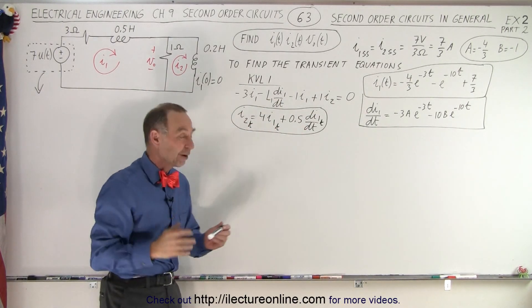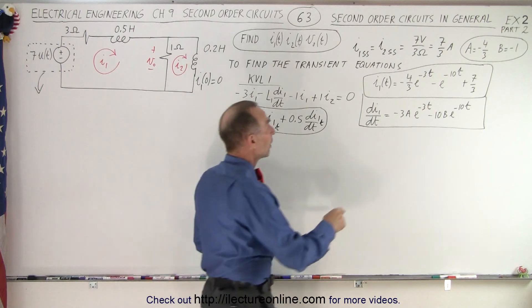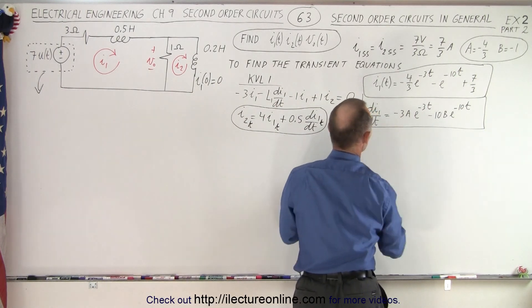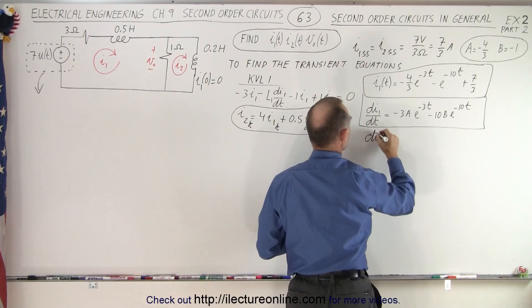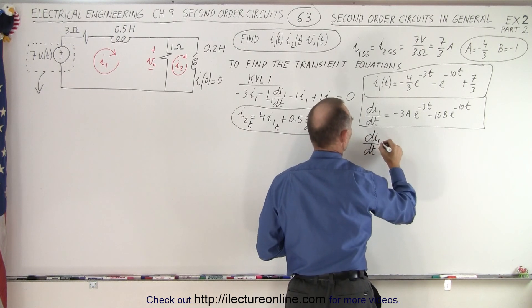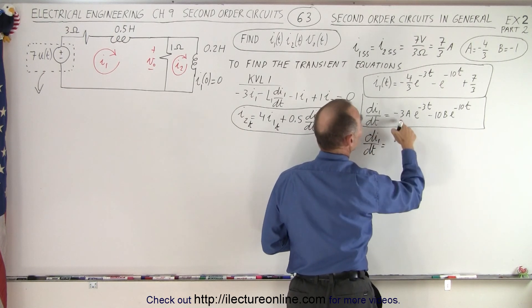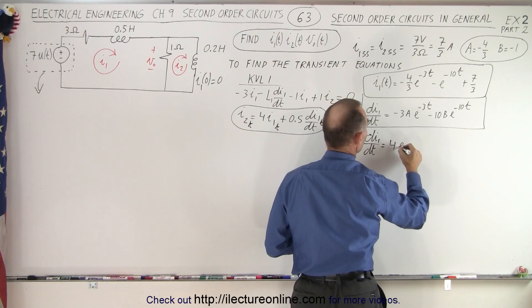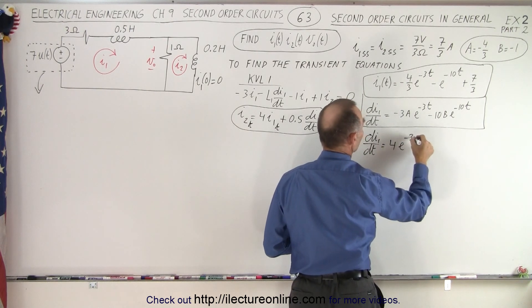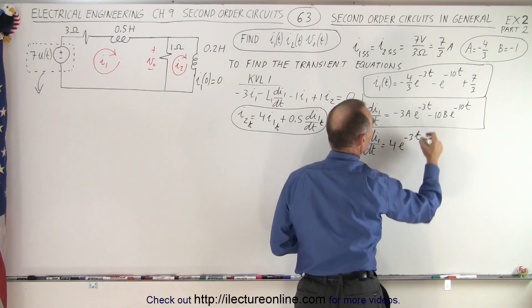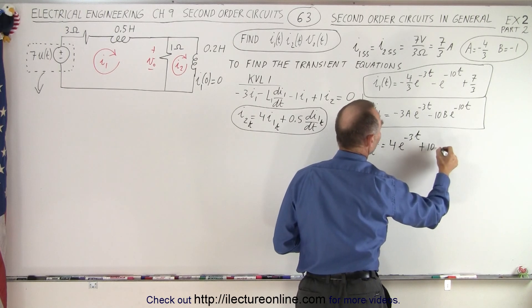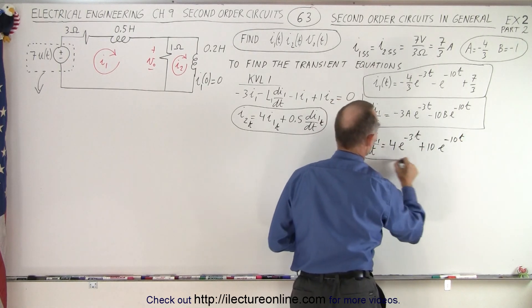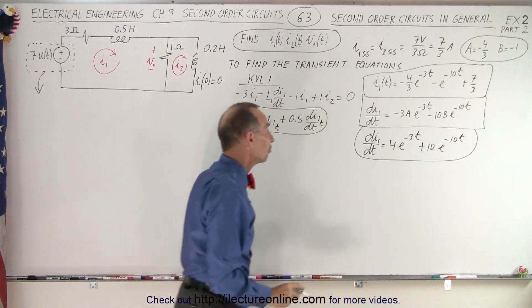First we need to figure out what those coefficients are. So A being minus four-thirds times the minus three means that di/dt of the first mesh is equal to — the negatives cancel and the threes cancel — giving four e to the minus three t, and for B that would be plus ten times e to the minus ten t.